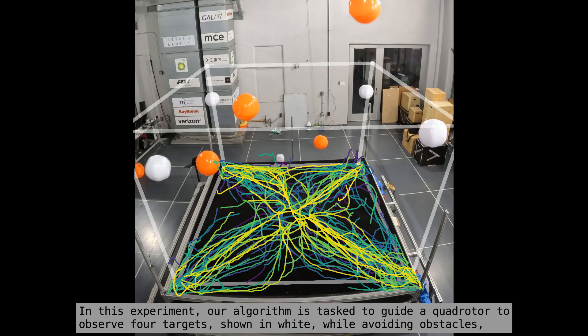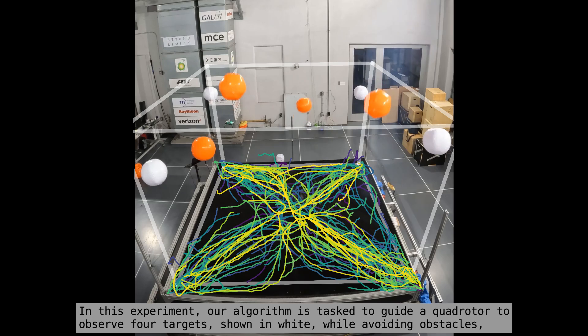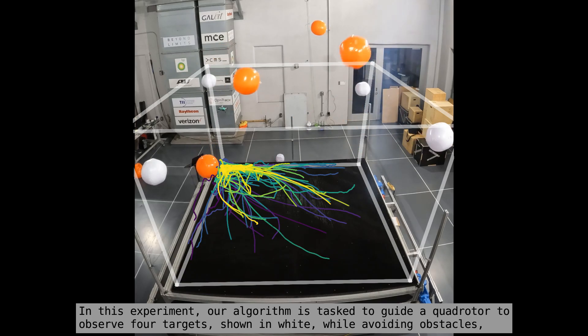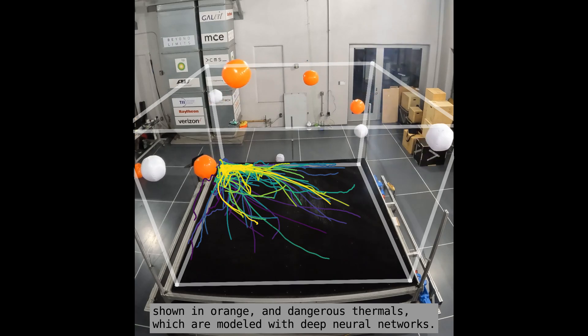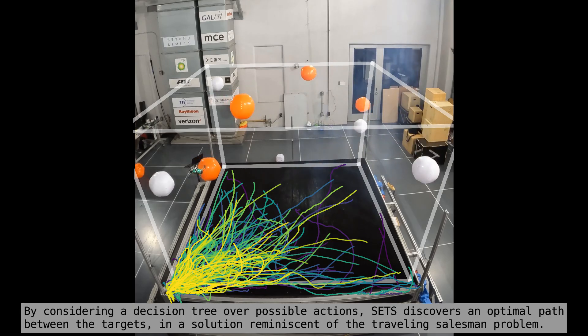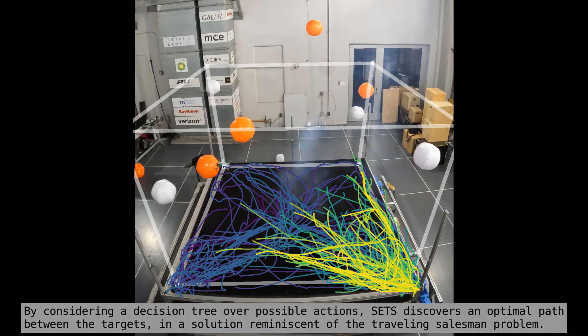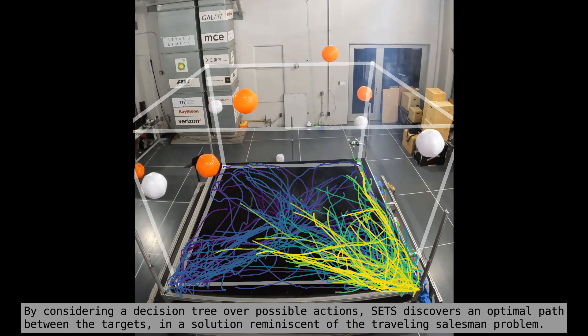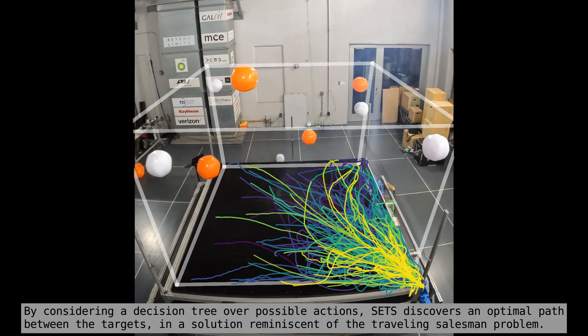In this experiment, our algorithm is tasked to guide a quadrotor to observe four targets shown in white, while avoiding obstacles shown in orange, and dangerous thermals which are modeled with deep neural networks. By considering a decision tree over possible actions, SETS discovers an optimal path between the targets in a solution reminiscent of the traveling salesman problem.